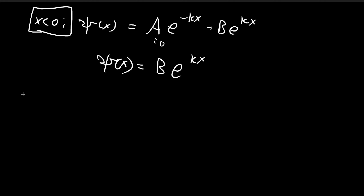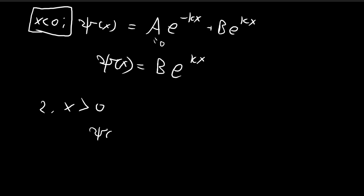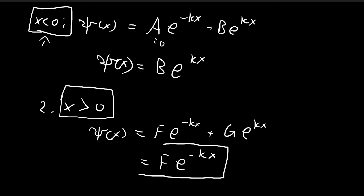For x > 0, the delta function term is again 0, giving the same differential equation. The general solution is ψ(x) = F·e^(kx) + G·e^(−kx), with different constants F and G. Applying the boundary condition: as x tends to positive infinity, the e^(kx) term blows up and cannot be normalized, so G... rather, F must equal 0. This leaves ψ(x) = F·e^(−kx) for x > 0.